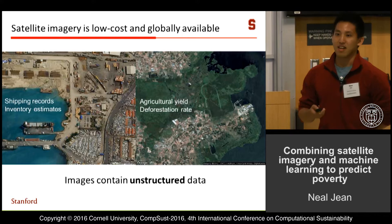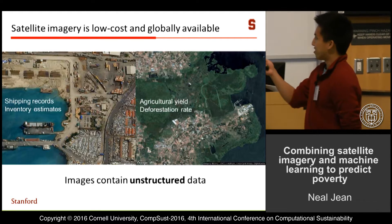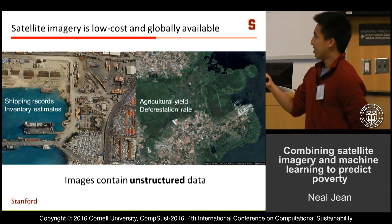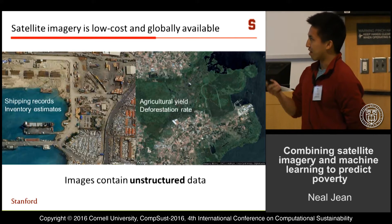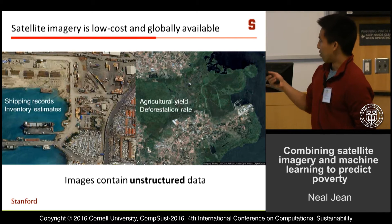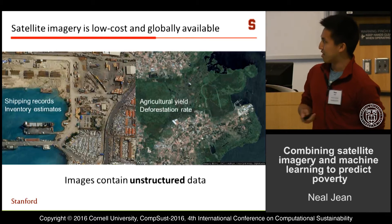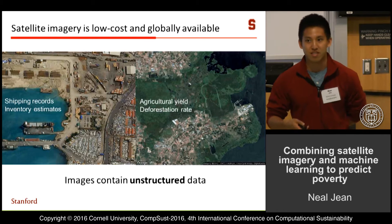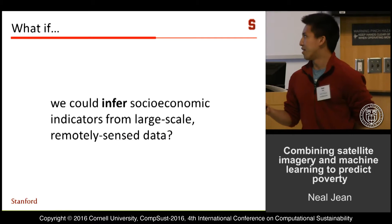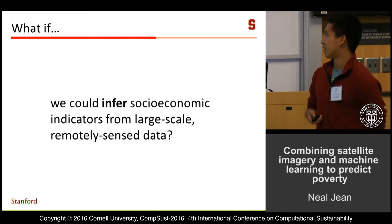So we propose to use satellite imagery to help us fill in these data gaps. As you can see from these satellite images, they contain useful information. Traditionally you might look at things like shipping records, inventory estimates, or agricultural yield — these images contain some information about those things, but it's unstructured data. The big question is: can we infer the socioeconomic indicators we care about from these unstructured satellite images?